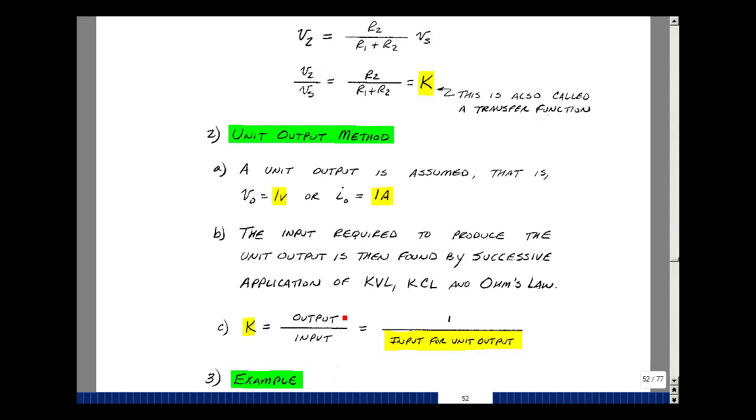Since the ratio of any output to any input is K, we can then use the fact that we've made this equal to 1 and that we've solved for what input needs to produce that. Then we can go back to our original problem and solve for the output due to the source that we were given. Let me show you an example.